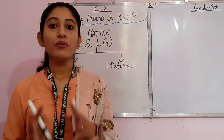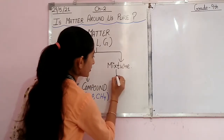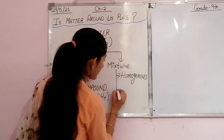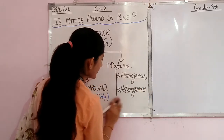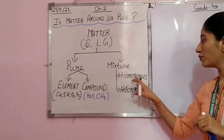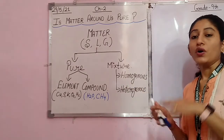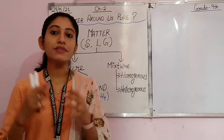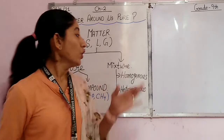So from here we come to know that matter in pure substance form can be further divided into elements and compounds. Now we have mixture. Mixture exists in two forms: homogeneous and heterogeneous. What do you mean by a homogeneous mixture? When two components are mixed and the composition throughout is uniform, they are called a homogeneous mixture.